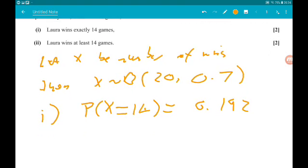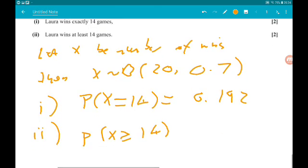Okay, then part two. At least 14 wins is the probability x is greater than or equal to 14. Now your calculator will always calculate up to the value of x that we put in. So for this, we need to use binomial CD.